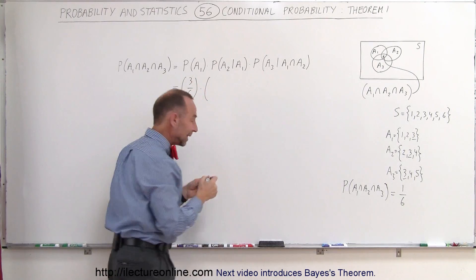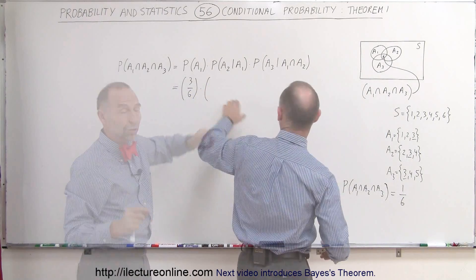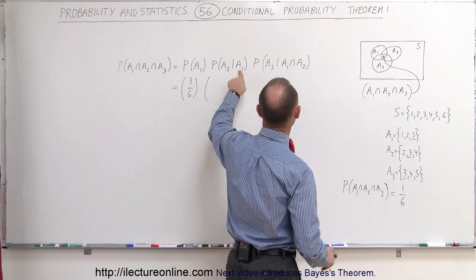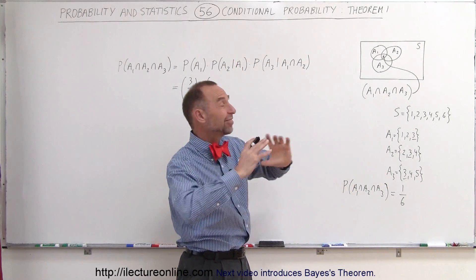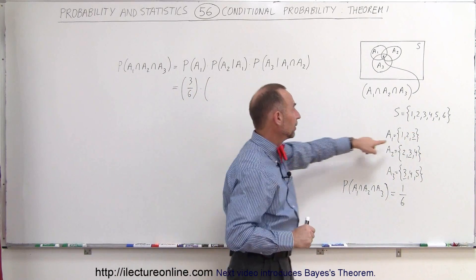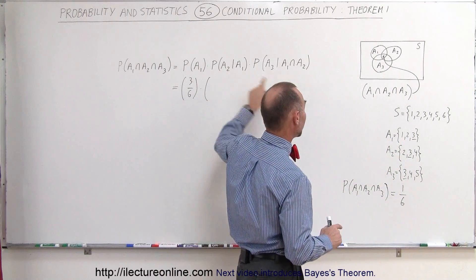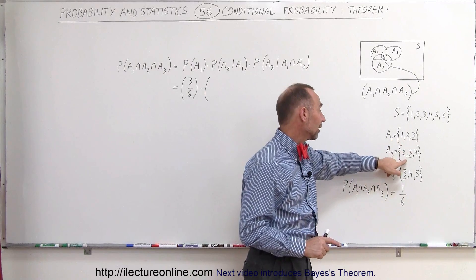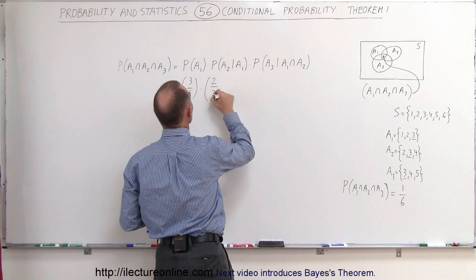Now multiply by the probability that A2 will occur once A1 has already occurred. Knowing A1 has occurred reduces our sample space from 6 to just 3 possible outcomes. Of A2's outcomes {2, 3, 4}, two of them — 2 and 3 — are in A1's reduced space, so the conditional probability P(A2|A1) is 2 divided by 3.